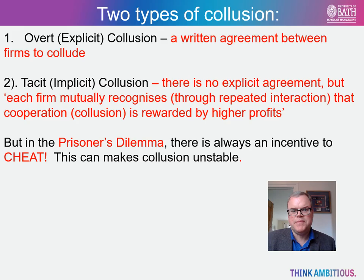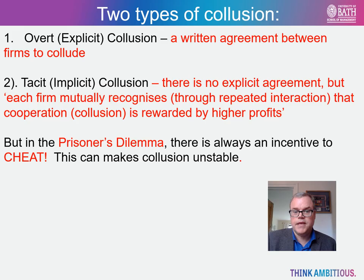There are two types of collusion. The first is overt or explicit collusion — a formal written agreement between firms to collude. We rarely observe these since collusion is now illegal in most countries. OPEC is of course an international explicit agreement between oil-producing countries where no legal jurisdiction can prevent it. The second type is tacit collusion: there is no explicit agreement, but each firm mutually recognizes through repeated interaction that cooperation is rewarded by higher profits. However, whatever agreement is struck, there is always an incentive for one player to cheat.